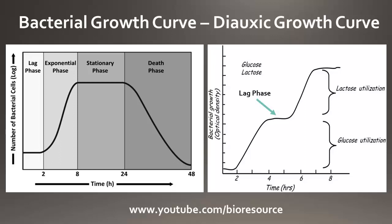So what is the diauxic growth curve? When a bacterium is grown on a media containing both glucose and lactose, we will observe a diauxic growth curve. Initially there will be a lag phase and then it enters the exponential phase.